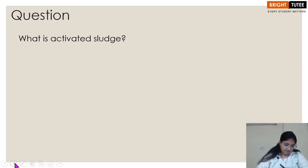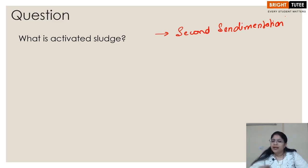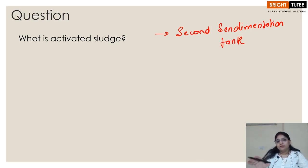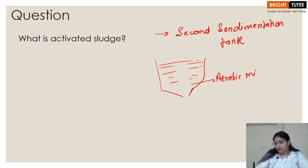What is activated sludge? Activated sludge is formed in the second sedimentation tank, which comes after the aerator. In the aerator, aerobic bacteria decompose or consume human waste, animal waste, or any other waste present in the clarified water. The water then flows into the second sedimentation tank, where it stays for some time. This tank is also sloped from the middle, and the aerobic microbes settle down along with the products they have decomposed.